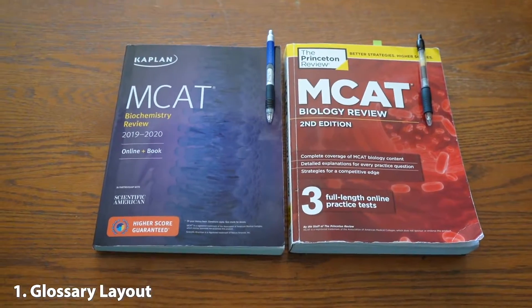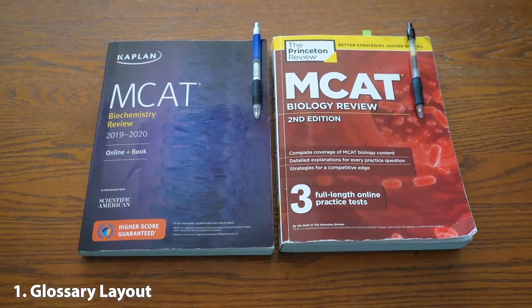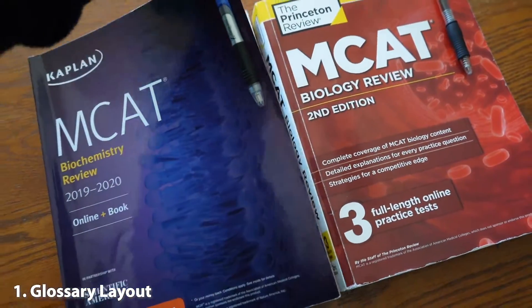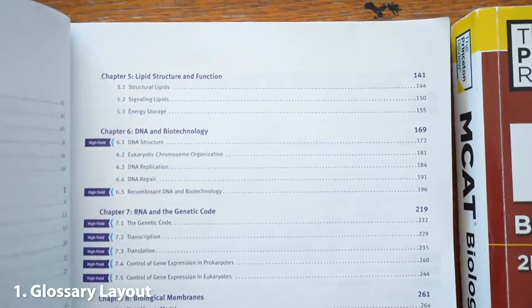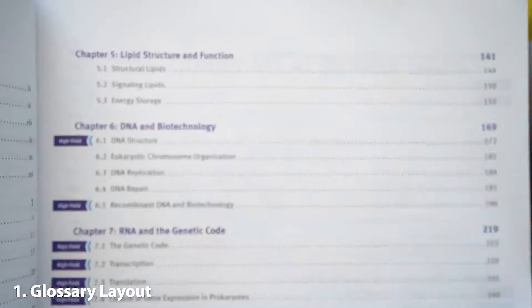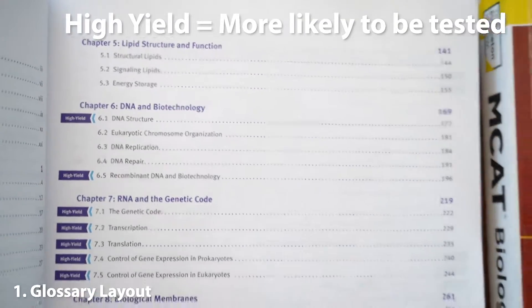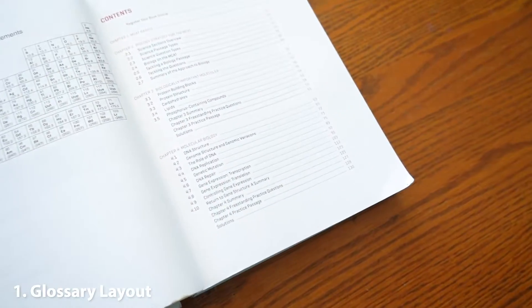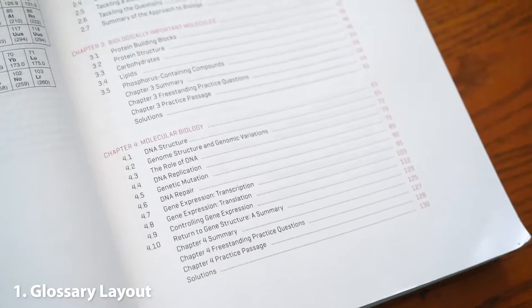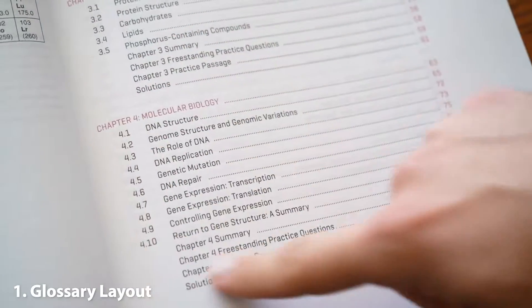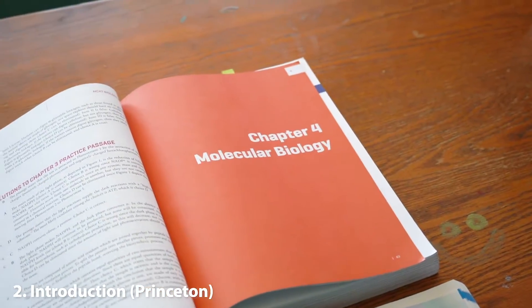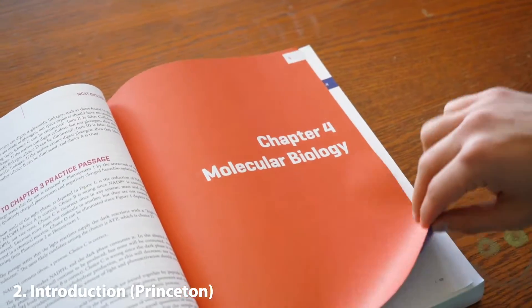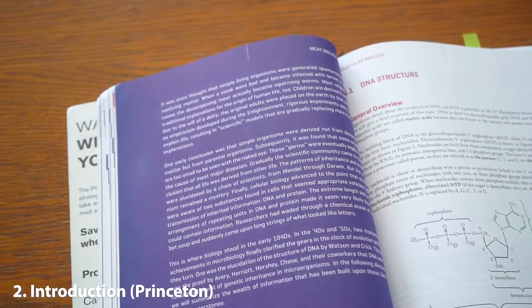Alright, so the first thing we wanted to show you is everything about DNA replication. You can find DNA replication in the molecular biology chapter of the Princeton books. They start with a quick introduction of the whole chapter.